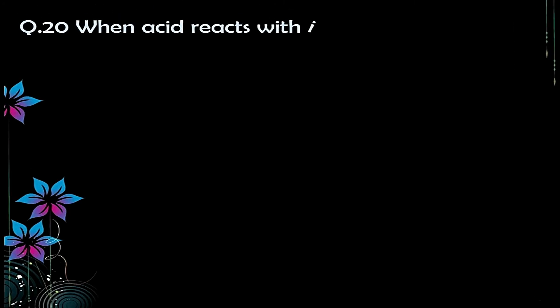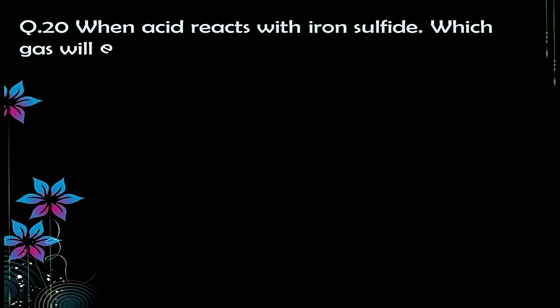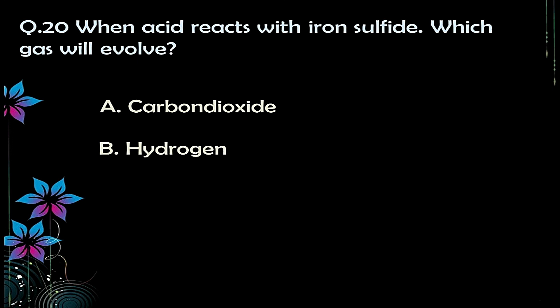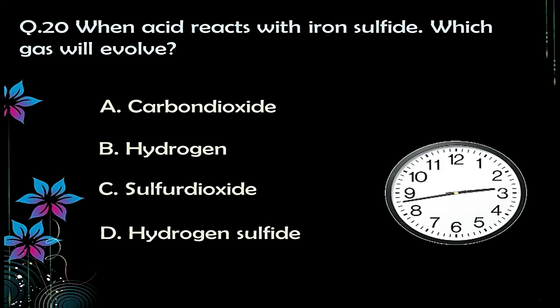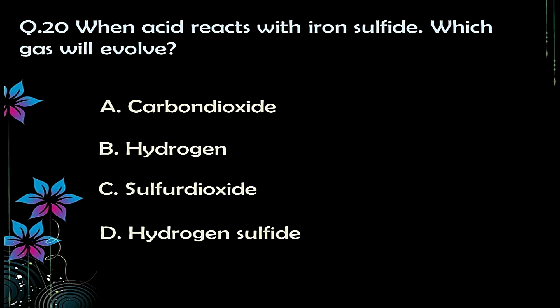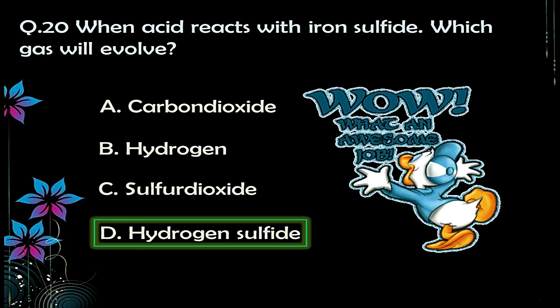Question number twenty: when an acid reacts with iron sulfide, which gas will evolve? Options: A) CO₂, B) H₂, C) SO₂, D) hydrogen sulfide gas. The correct answer is option D — hydrogen sulfide gas.